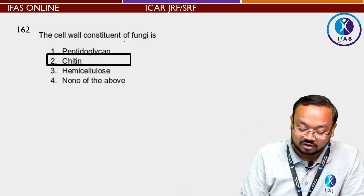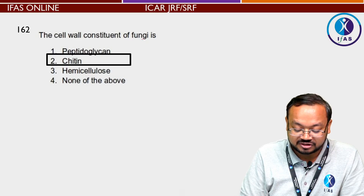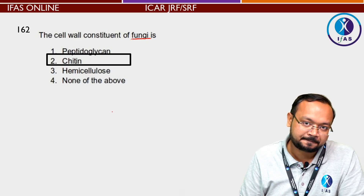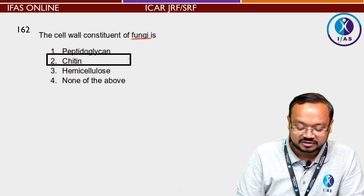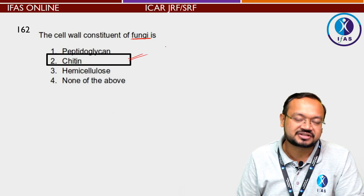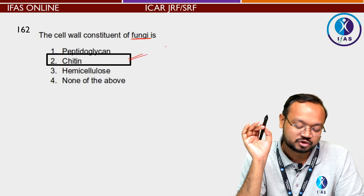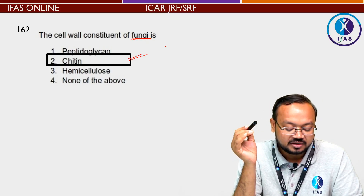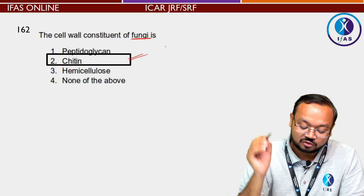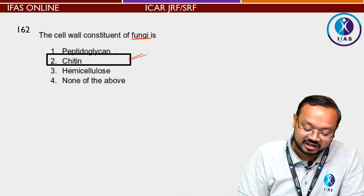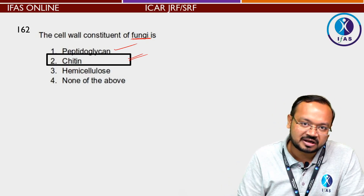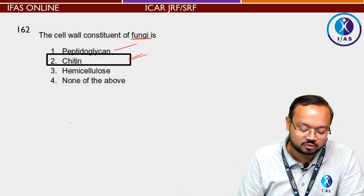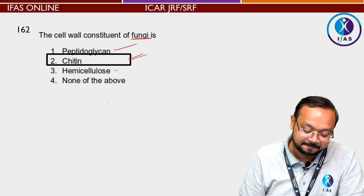Next question: The cell wall of fungi किससे बना होता है? यह chitin का बना होता है जिसे fungal cellulose भी कह सकते हैं। अगर bacteria के cell wall की बात होती तो peptidoglycan का बना होता है। Plant के cell wall की बात होती तो cellulose और hemicellulose का बना होता है।